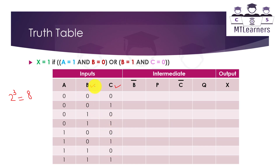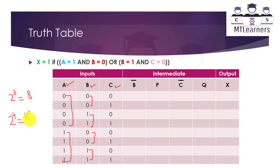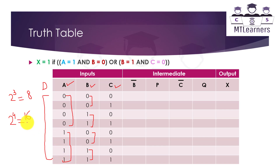For input B, write two zeros, two ones, two zeros, two ones. For input A, write four zeros and four ones. As an extension example: if we had four inputs, 2 to the power 4 equals 16 rows. We would add a column D with eight zeros then eight ones, keeping C, B, and A patterns the same, giving a 16-row table.